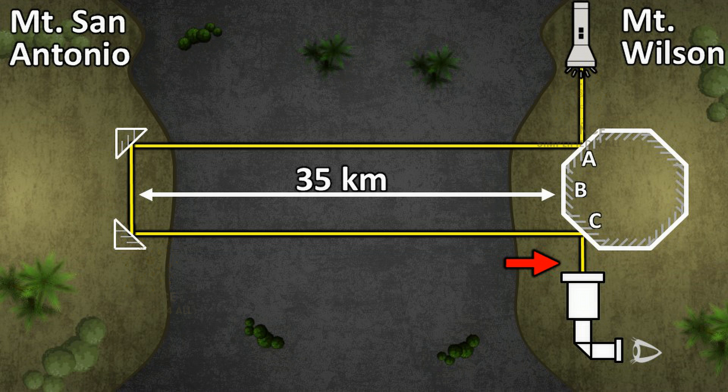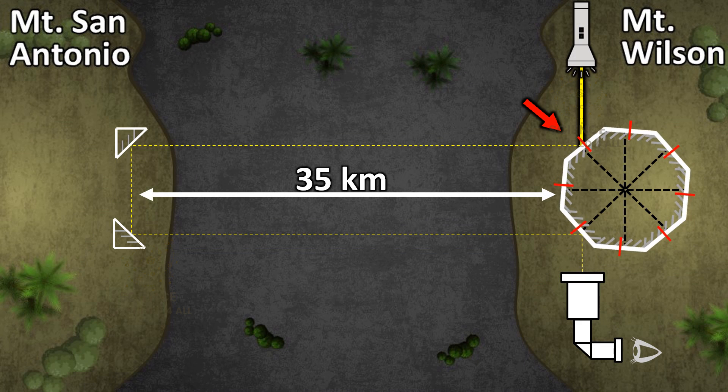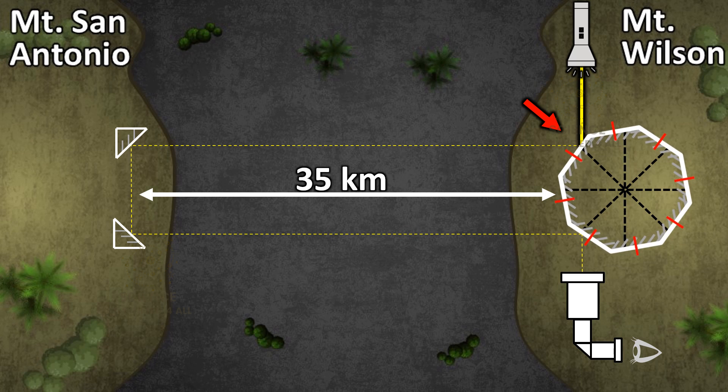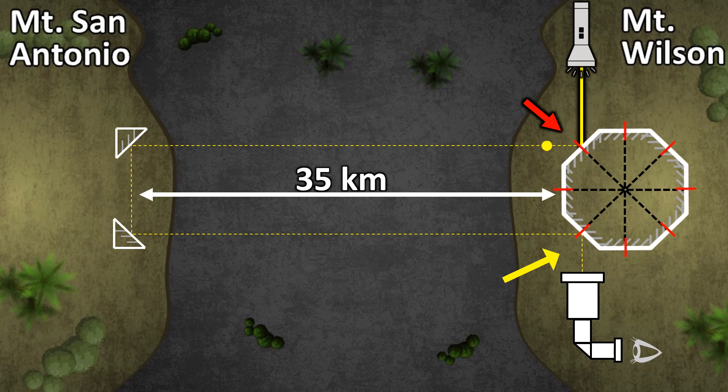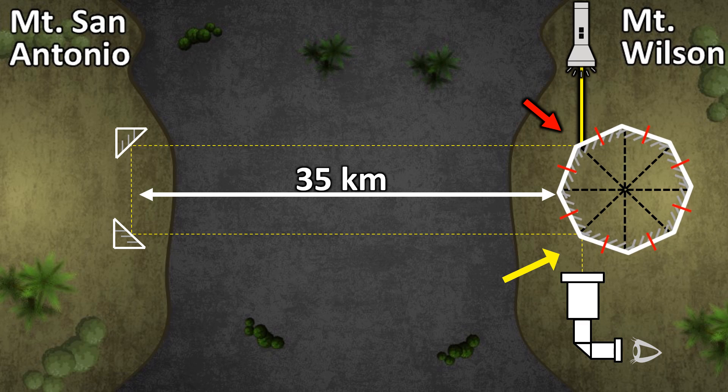But what happens when the mirror starts to rotate? As the mirror rotates, face A aligns at 45 degrees to the light path only for a brief moment during its rotation. At this exact moment, a pulse of light is sent toward the distant mirrors at Mount San Antonio. This pulse of light gets reflected by the mirrors there and travels back. However, as the mirror rotates, by the time this light returns to Mount Wilson, face C is no longer at 45 degrees. So, the returning light cannot enter the telescope and the observer no longer sees the arc lamp's light.